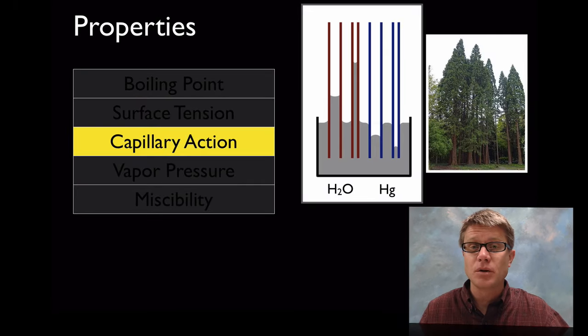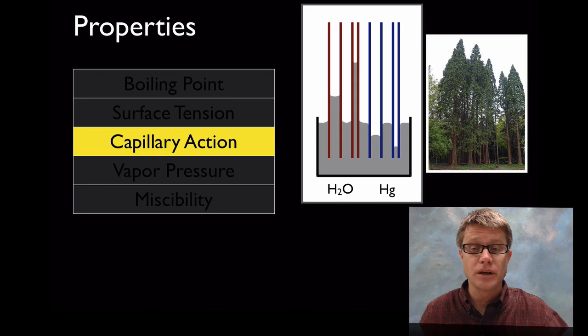Capillary action is movement of a liquid up a tube. If we're looking at water, not only is water attracted to itself, we call that cohesion, but it's also attracted to the tube that it's in, we call that adhesion. The thinner we make that tube, the more the water is going to move up.